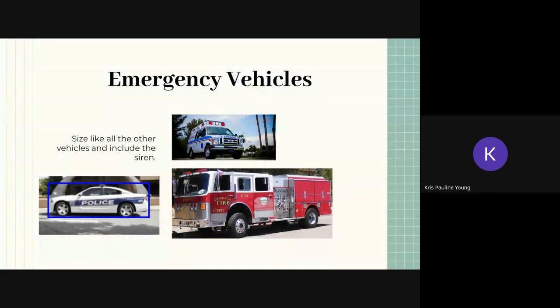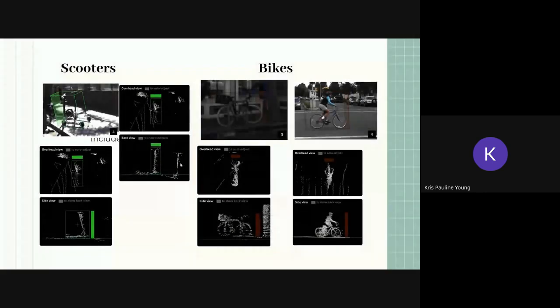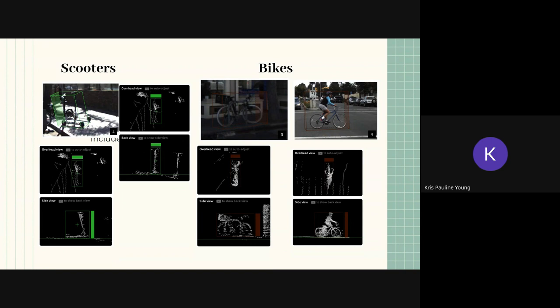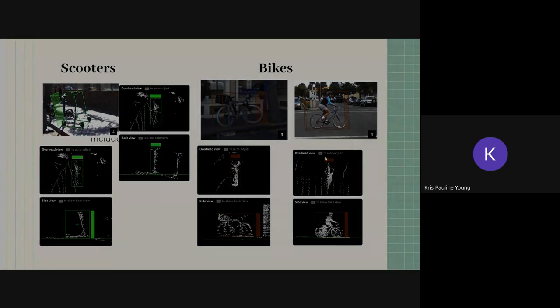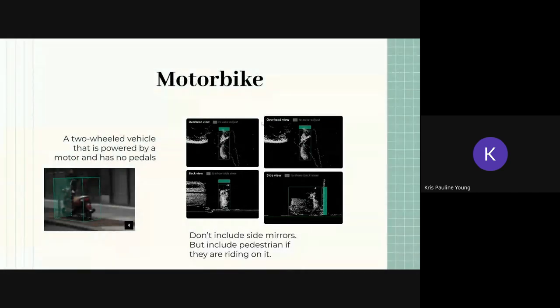Emergency vehicles, just make sure to include the siren which is oftentimes what they will come with. That's an extremity that we can include. For bikes, this is how we size bikes that are standalone or scooters or bikes with a person. Make sure that your positioning is accurate and at least not bleeding out of the cuboid. Same thing with the motorbikes, it's very similar to our bicycle, but we don't include the side mirror here.